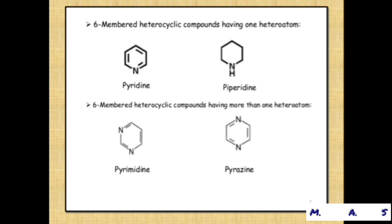Six-membered heterocyclic compounds having one heteroatom: pyridine and piperidine, both six-membered rings with one nitrogen heteroatom. Six-membered heterocyclic compounds having more than one heteroatom — examples: pyrimidine, with nitrogen at positions 1 and 3; and pyrazine, with nitrogen at positions 1 and 4.